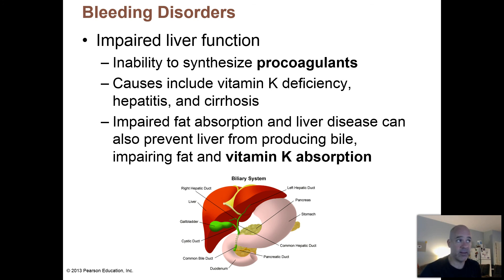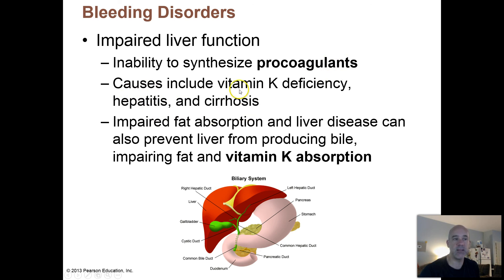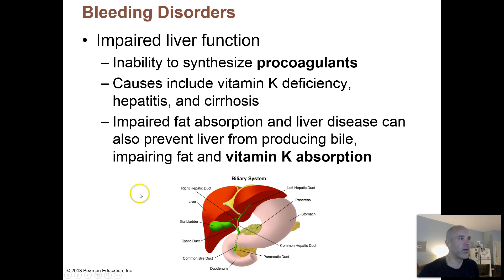Bleeding disorders can also be caused if your liver is not functioning properly, because the liver makes most of the pro-coagulants — proteins in inactive form in the blood that get converted into clotting factors to help make fibrin clots. Various things can cause this: a vitamin K deficiency, hepatitis — inflammation of the liver — and cirrhosis, where you have damage to liver tissues, often due to excessive alcohol consumption, which kills liver cells.